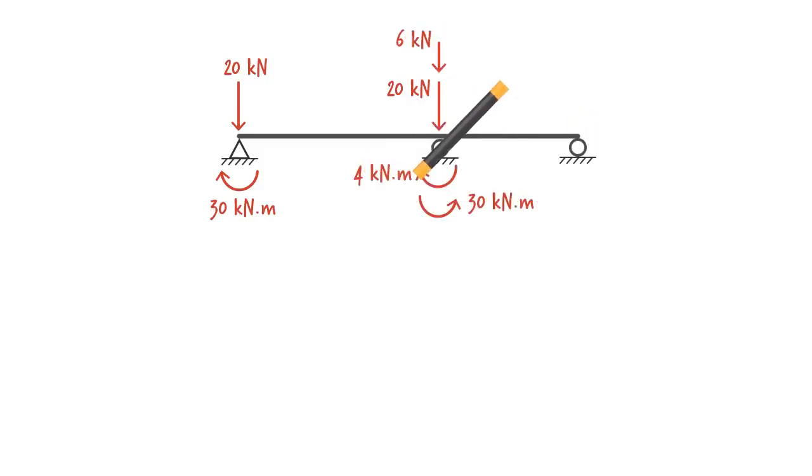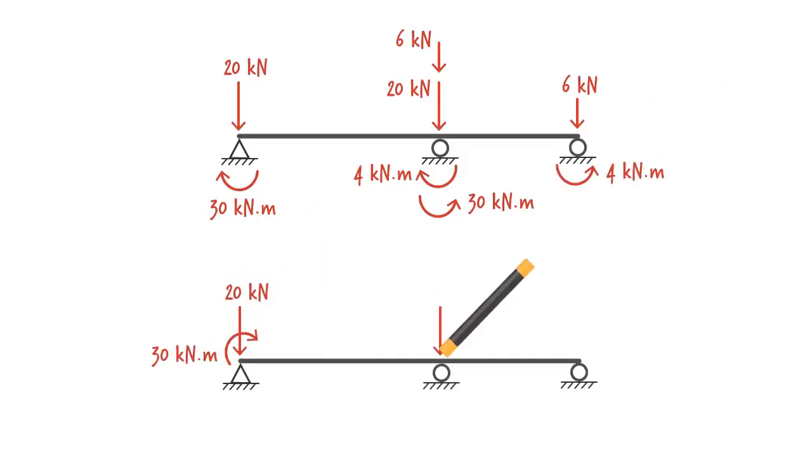To summarize, the beam is subjected to two sets of equivalent joint loads. Therefore, the cumulative joint loads become... Now that we have transformed the member loads to joint loads, we can proceed with the analysis of the beam as was described in Lecture SA46.